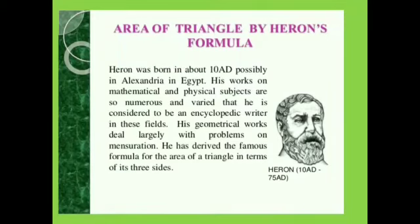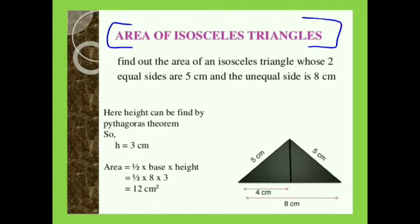Heron was born in about 10 AD, possibly in Alexandria in Egypt. His works on mathematical and physical subjects are so numerous and varied that he is considered to be an encyclopedic writer in these fields. His geometrical works deal largely with problems on mensuration. He has derived the famous formula for the area of a triangle in terms of its three sides.